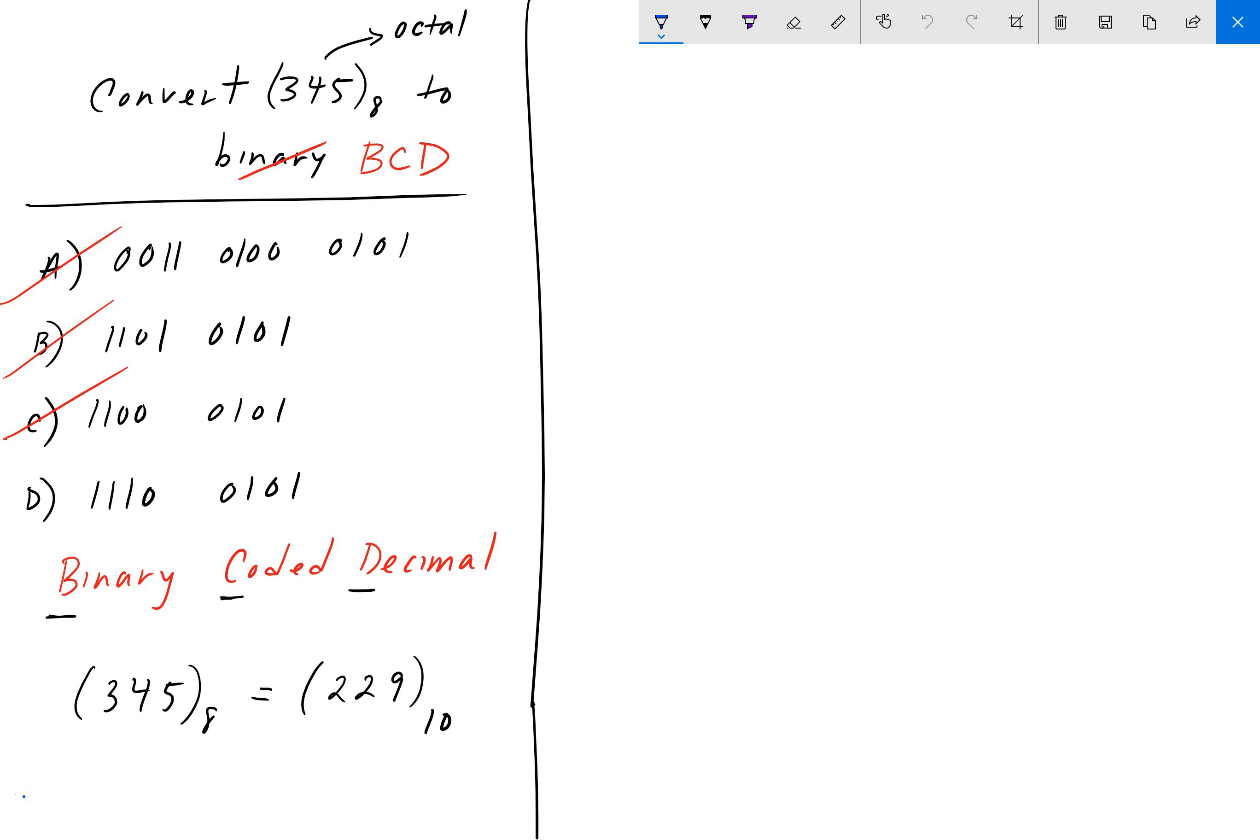Hey guys, welcome back to Engineering Education. In the last problem, we took 345 octal and converted it to natural binary. In this problem, we're asked to take that same 345 octal and convert it to BCD.